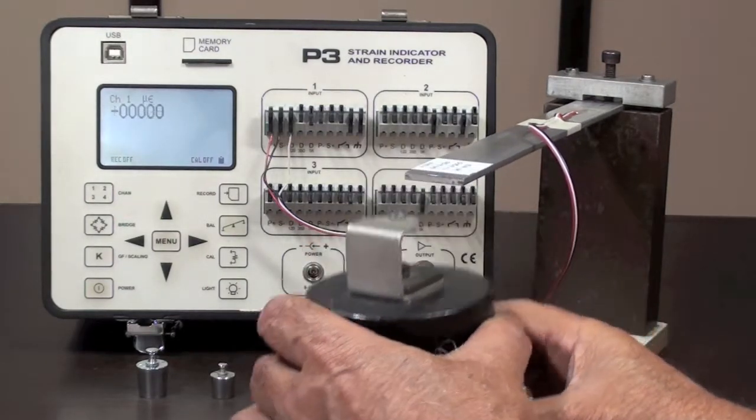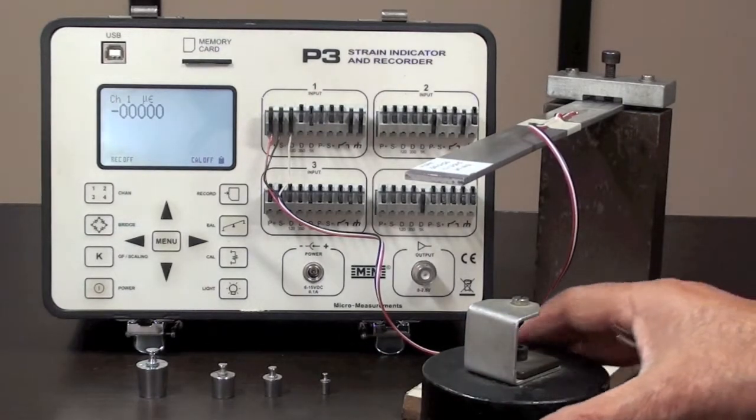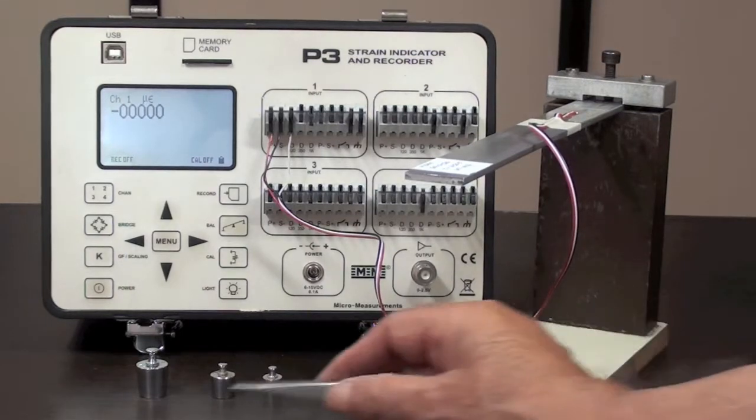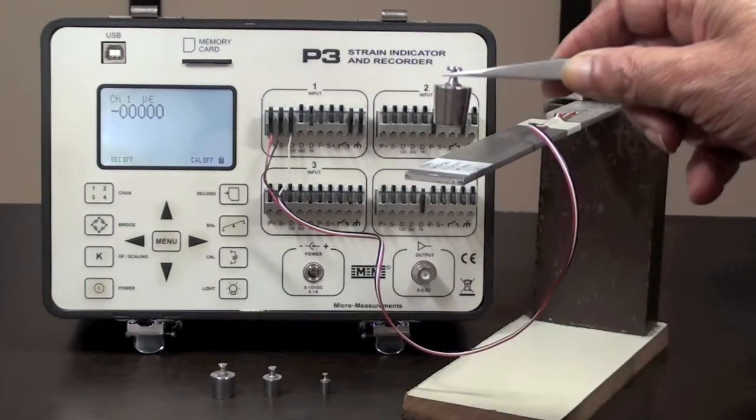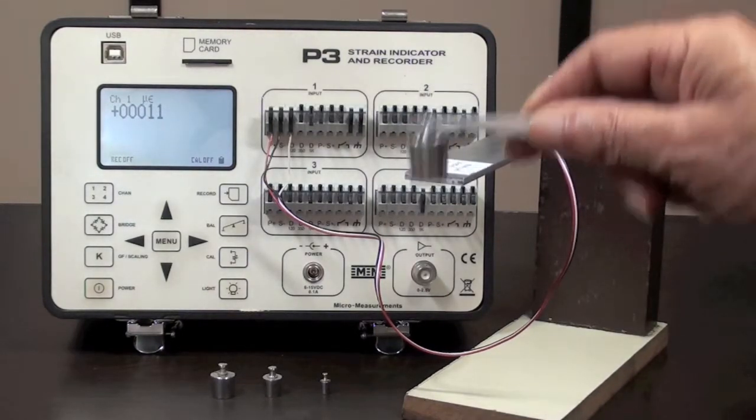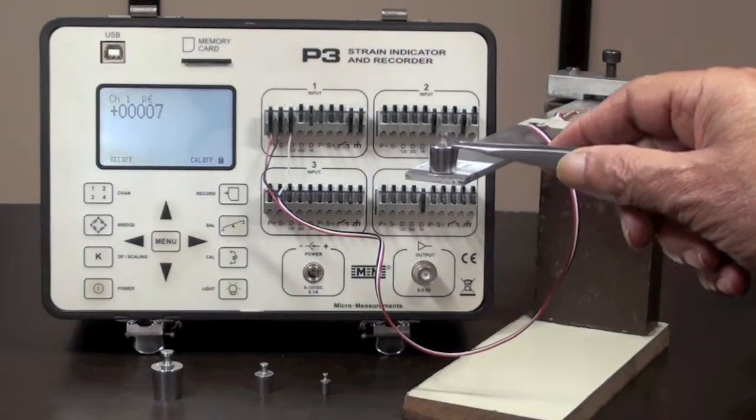To see how sensitive a strain gauge can be, the beam is loaded with one hundredth of this weight. For 10 grams weight, the reading should be 5.5 microstrain.